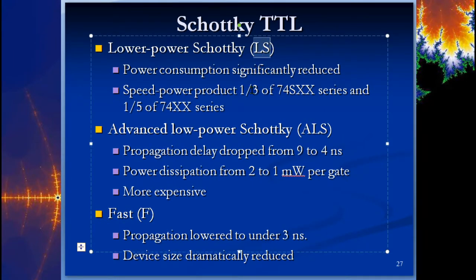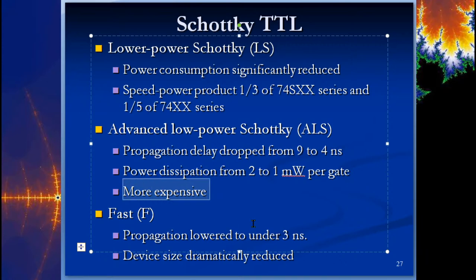The LS (Low-power Schottky) significantly reduces power consumption, with a speed-power product one-third of the 74S and one-fifth of the standard 7400. The Low-Power Schottky (ALS) drops propagation delay from 9 to 4 nanoseconds and power dissipation from 2 to 1 milliwatt per gate — more expensive because you're getting both improvements. The F series targets maximum speed, with propagation delay under 3 nanoseconds, and uses very small device sizes because transistors need very little power.